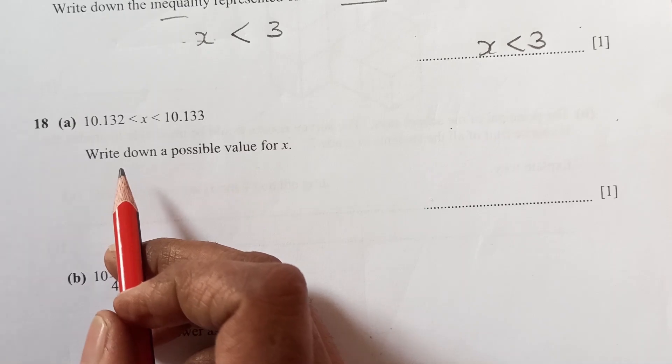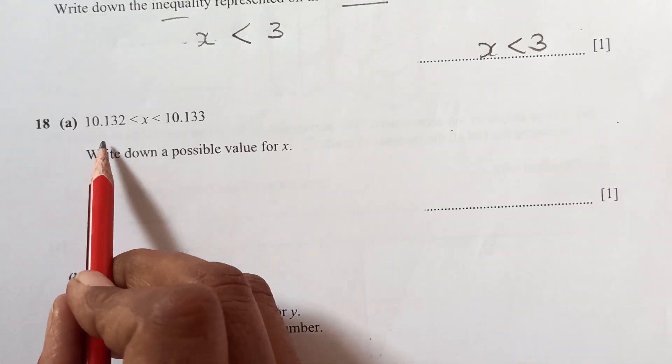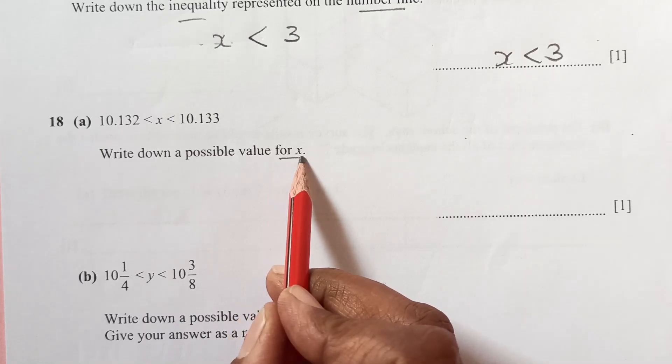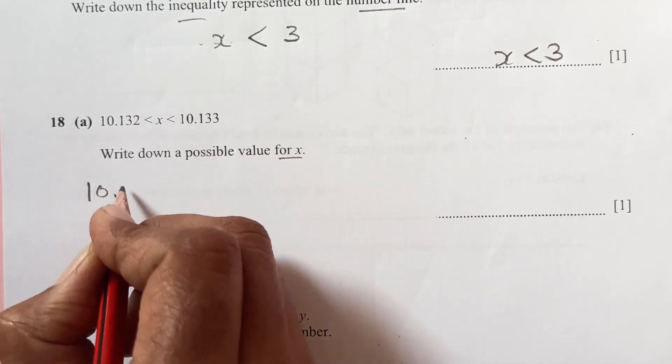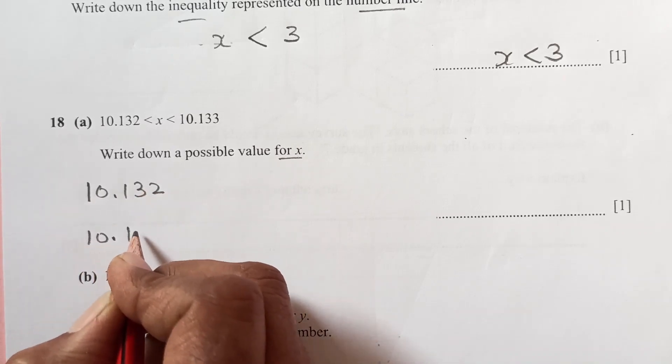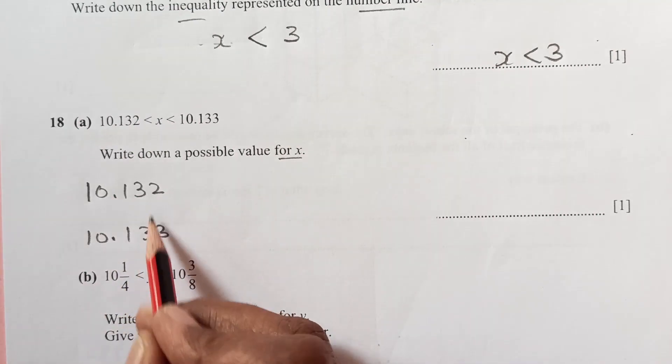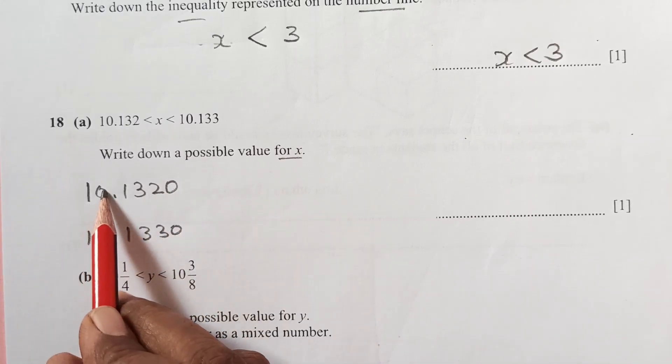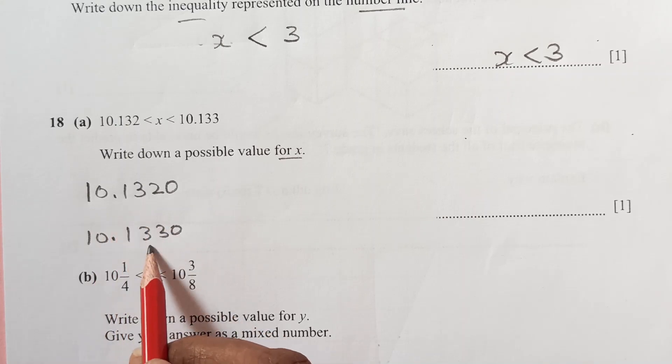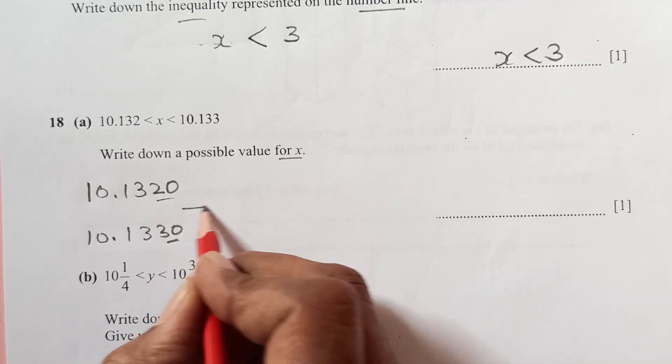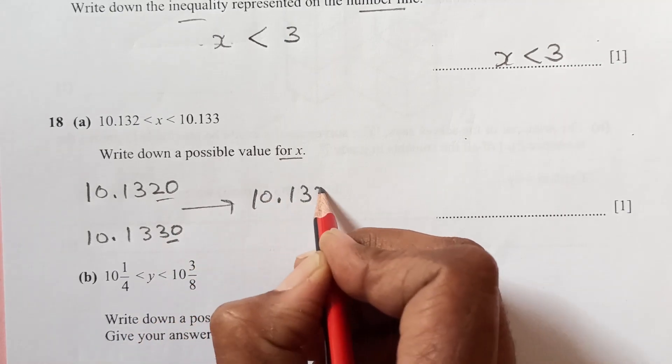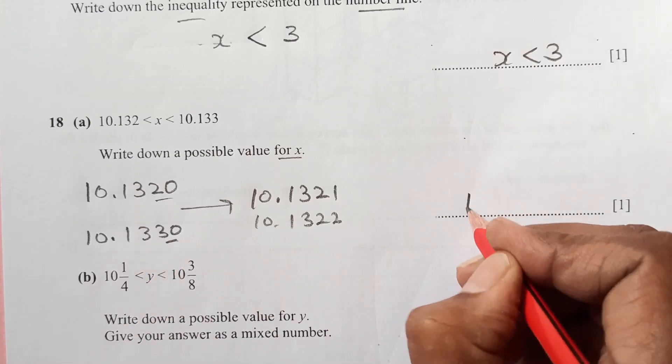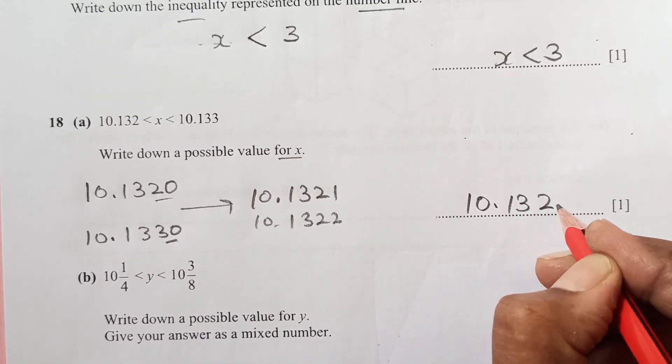18a. For 18a, we have here 10.132 less than x less than 10.133. Write a possible value of x. We are looking for a value which is in the middle of this and this 10.133. It's easy. Make it a 4 digit number. So we can make here, put 0. Now you see 10 whole part is same. 10.132 and 10.133 is same. This is 20 and 30. So we will take any number in middle somewhere here. It may be 10.1321 or it may be 10.1322, any number until 1329. So I would write here 10.1321.